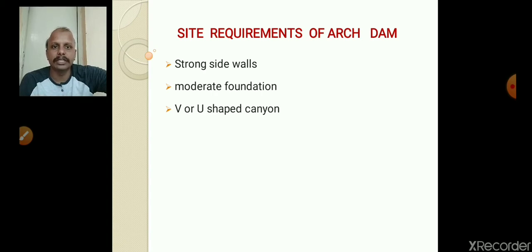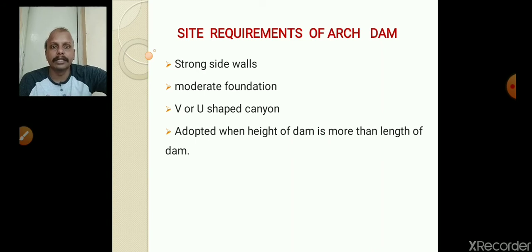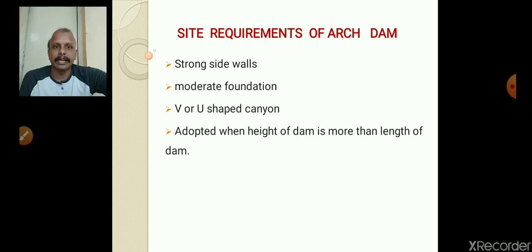Because of the reduced thickness, the self-weight of the Arch Dam is also reduced, which is why it can be constructed on a moderate type of foundation. The third requirement is that it requires a V-shape or U-shape canyon, meaning a valley. It cannot be constructed on plain rolling ground because Arch Dam requires abutments at the ends, which are available in V-shape or U-shape valleys.